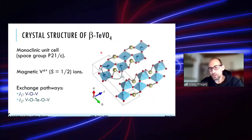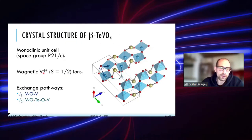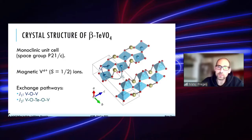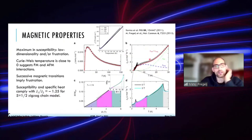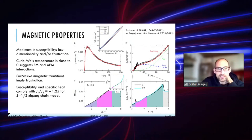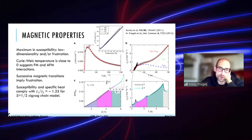Turning now to the actual system: the magnetic ions are vanadium 4+ with spin-1/2. You have spin chains where nearest-neighbor interaction goes through oxygen, and the next-nearest-neighbor interaction has a somewhat more complex exchange bridge. There are two chains within one unit cell. For the magnetic properties, we first measured the magnetic susceptibility, which shows a pronounced maximum around 12 K, indicating a low-dimensional or frustrated system.